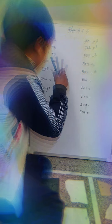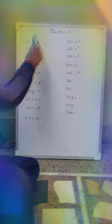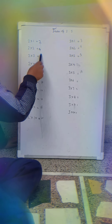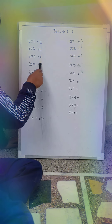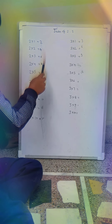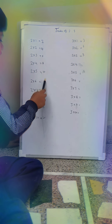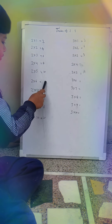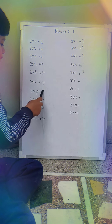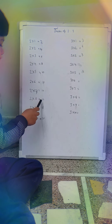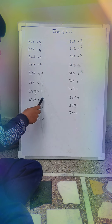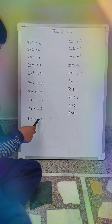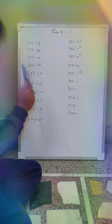2 times 1 is 2, 2 times 2 is 4, 2 times 3 is 6, 2 times 4 is 8, 2 times 5 is 10, 2 times 6 is 12, 2 times 7 is 14, 2 times 8 is 16, 2 times 9 is 18, 2 times 10 is 20.